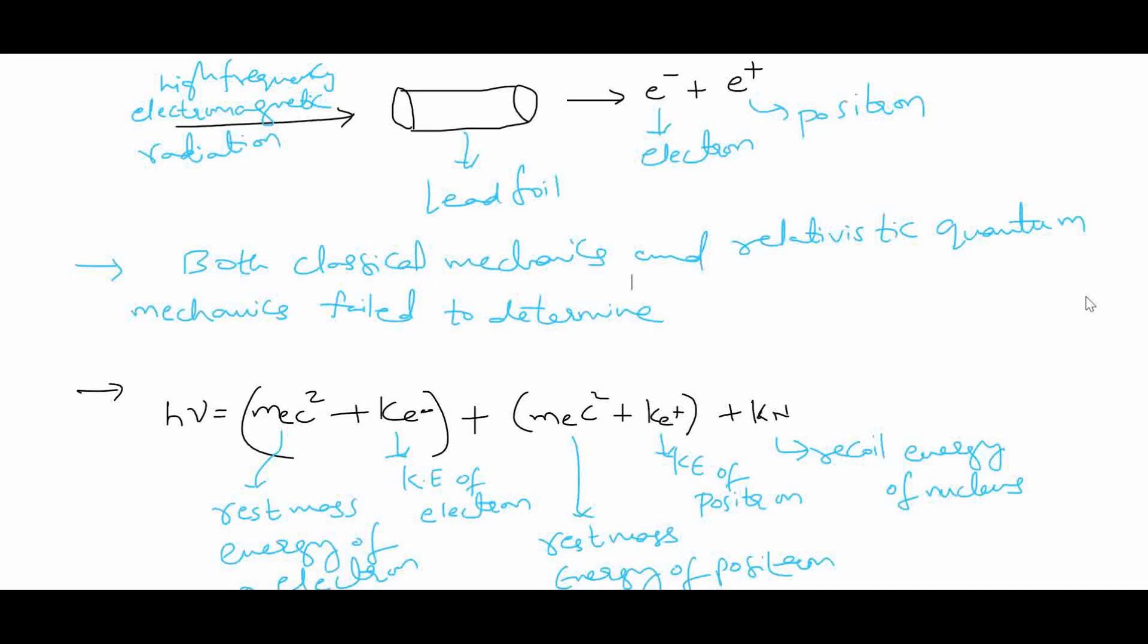The photon must interact with an external field, like a Coulomb field, provided by, for example, an atomic nucleus. We know that nucleus consists of protons and neutrons and has positive charge so that it can absorb some of the momentum once the electrons and positrons are produced.